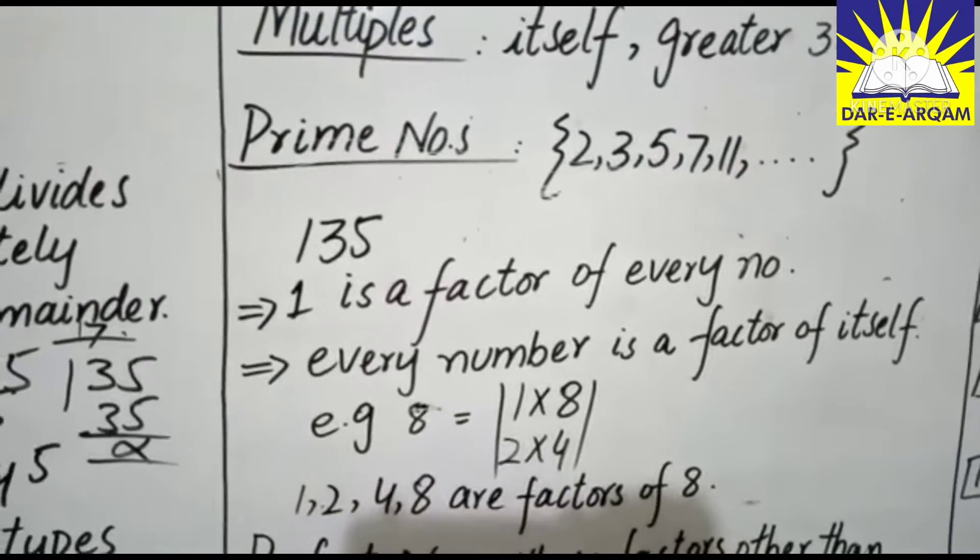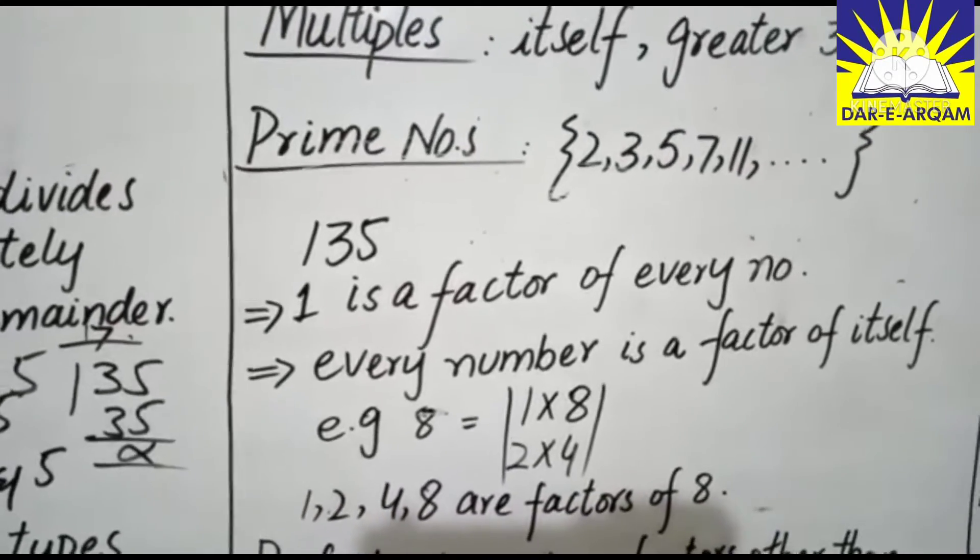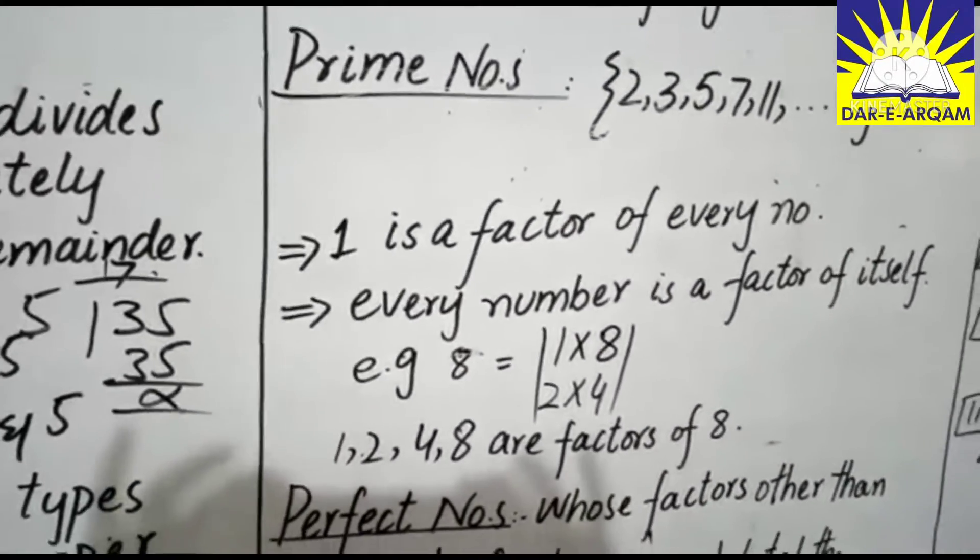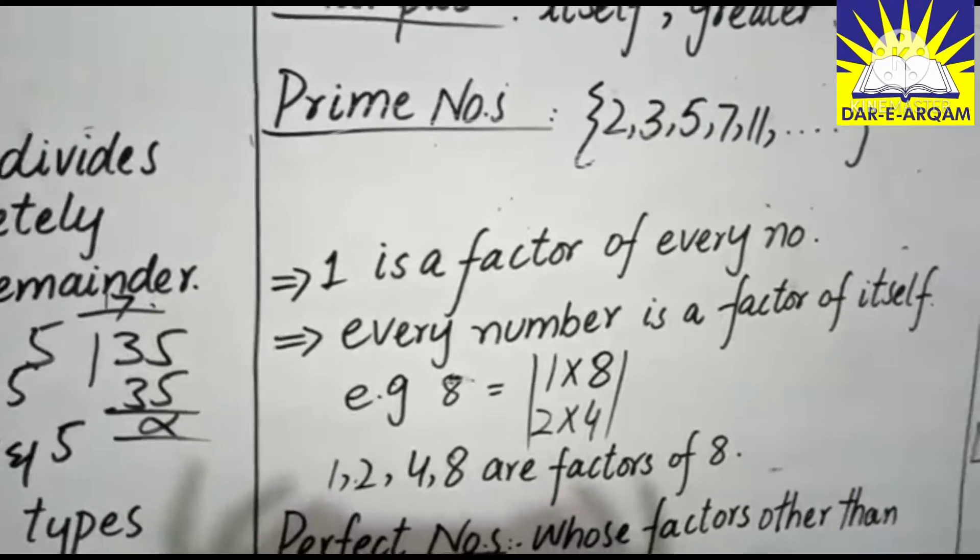1 is a factor of every number. Every number is a factor of itself.